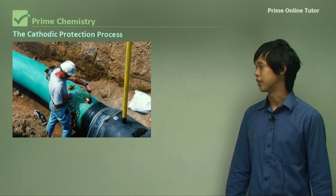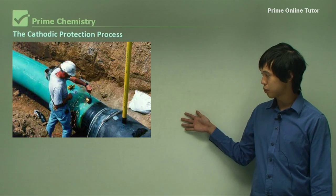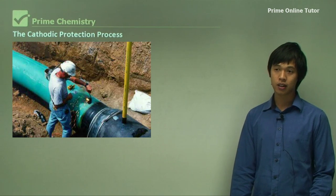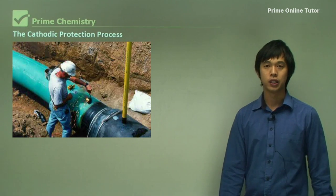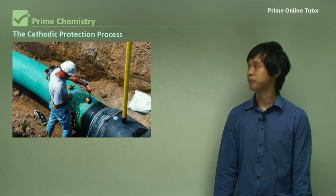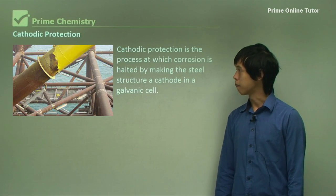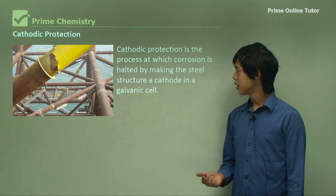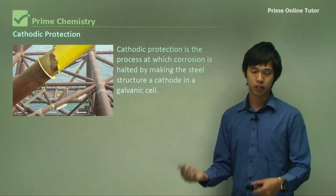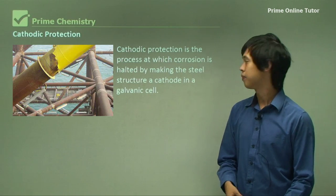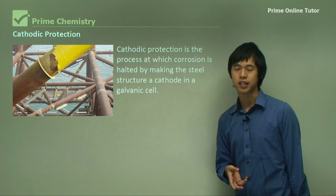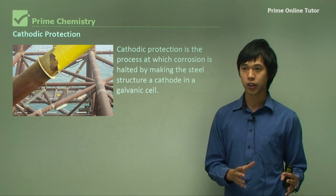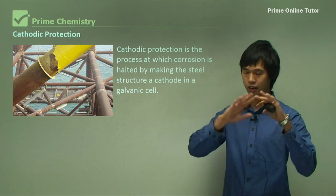You can see a big steel pipe dug into the ground. We don't want that pipe corroding, so we have to protect it somehow — we can use cathodic protection. Cathodic protection is the process by which corrosion is halted by making the steel, or whatever metal, a cathode in a galvanic cell. We want the steel to be the reducing electrode of a galvanic cell.